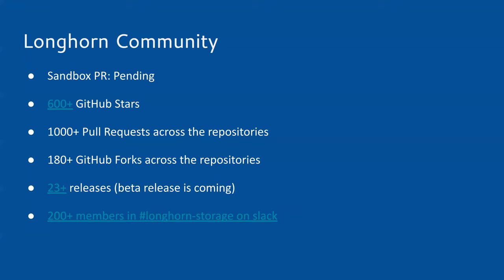We're going to announce a Longhorn beta and are targeting GA by the end of this year. After that, we'll spend much more effort on marketing, because we want to make sure the product is ready and user-friendly, and users can trust their data to us. You may have heard of Rancher projects like K3S and K3OS — we don't invest as much marketing as those projects, but once we reach beta and GA we will do more, and I expect the numbers to grow substantially.